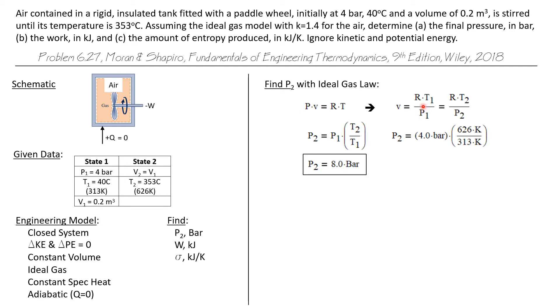We can say that the constant specific volume is RT over P. That means that RT1 over P1 is RT2 over P2. And the R's cancel. I can rearrange what's left and solve for P2. P2 is just P1 times T2 over T1. So P2 is 4 bar times 626 Kelvin divided by 313 Kelvin, which is a value of 2. And so P2 is 8 bar.